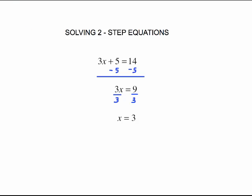We need to think about checking that x equals 3. So if x equals 3, we're going to put 3 in for that x and do the arithmetic. 3 times 3 plus 5. 3 times 3 is 9. 9 plus 5 is 14. It checks so we know we've done the problem correctly.